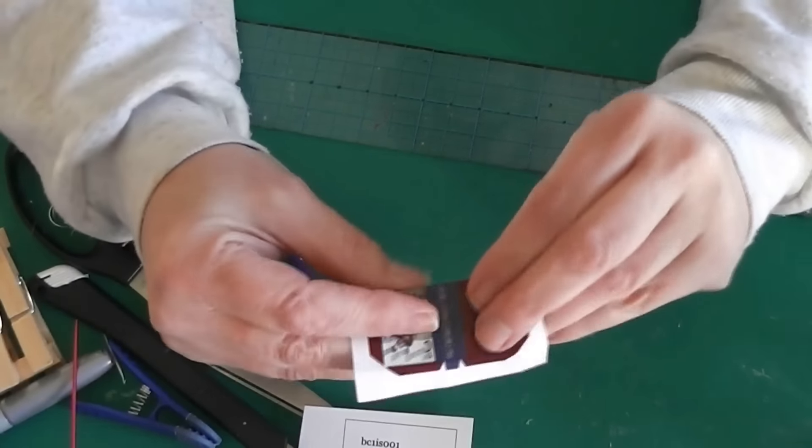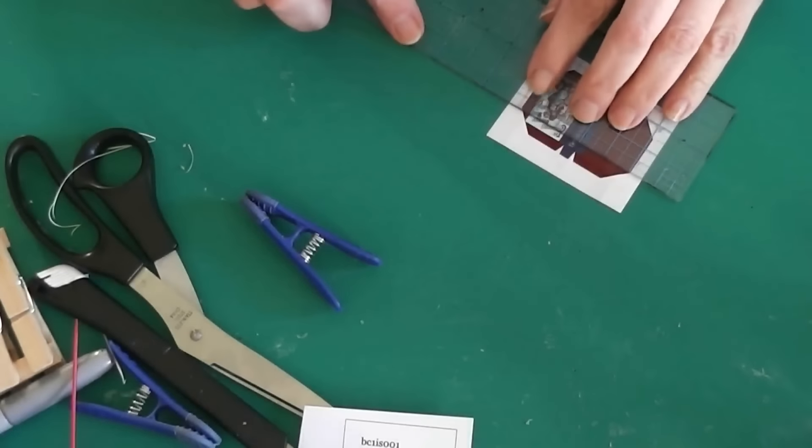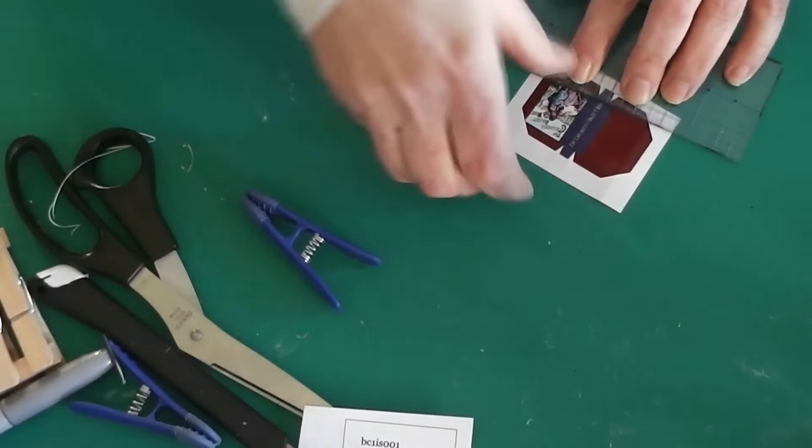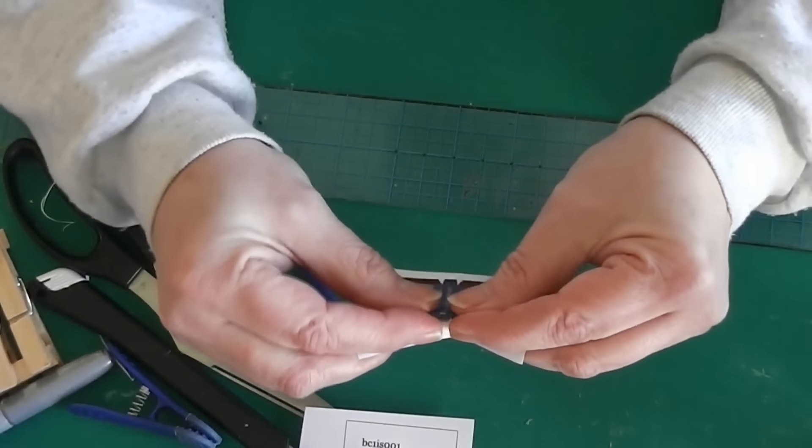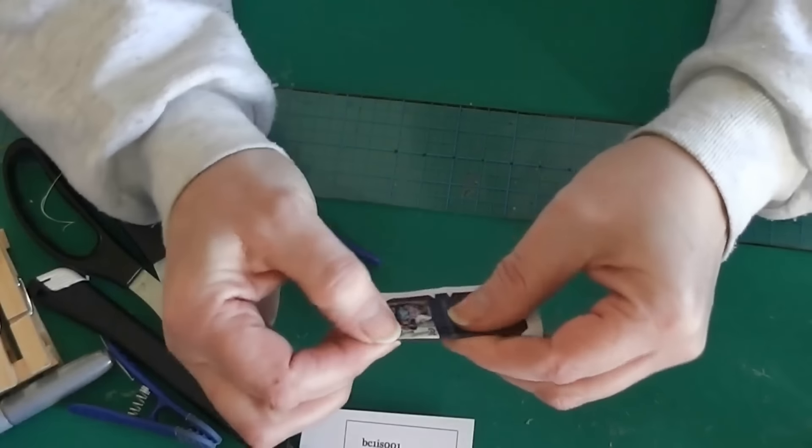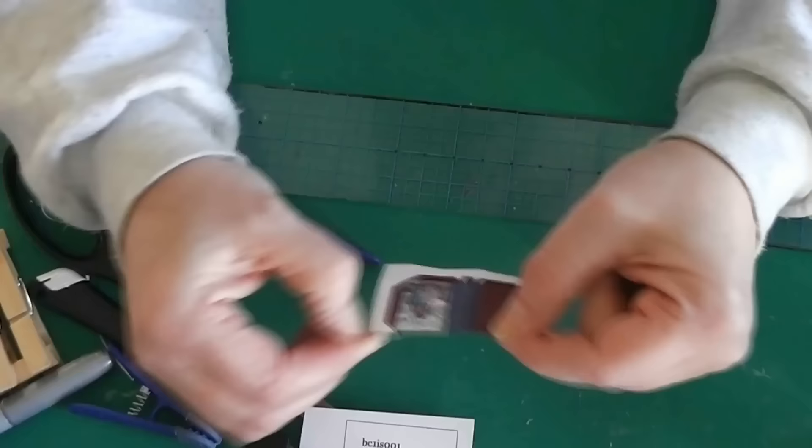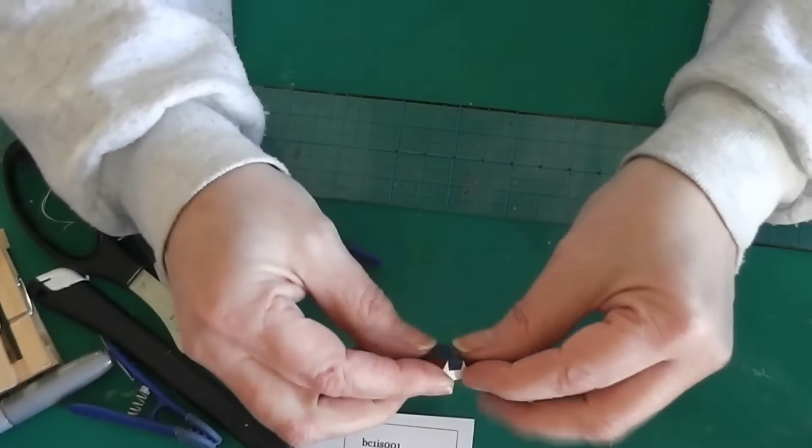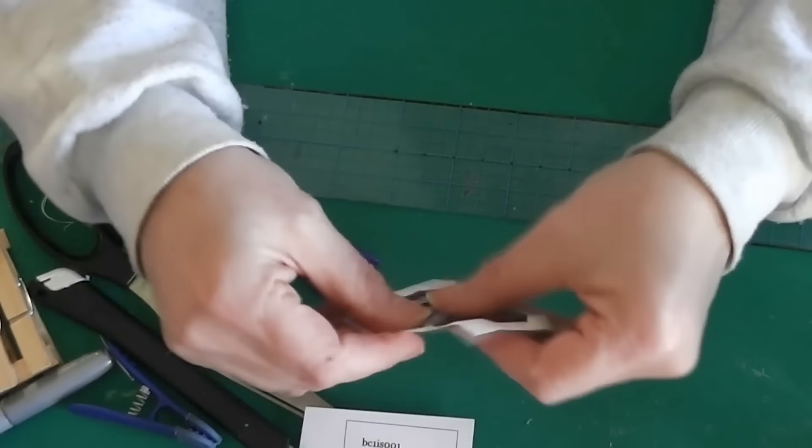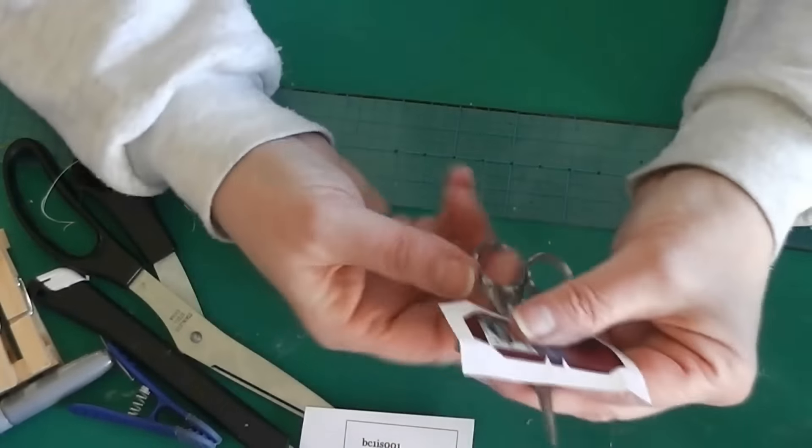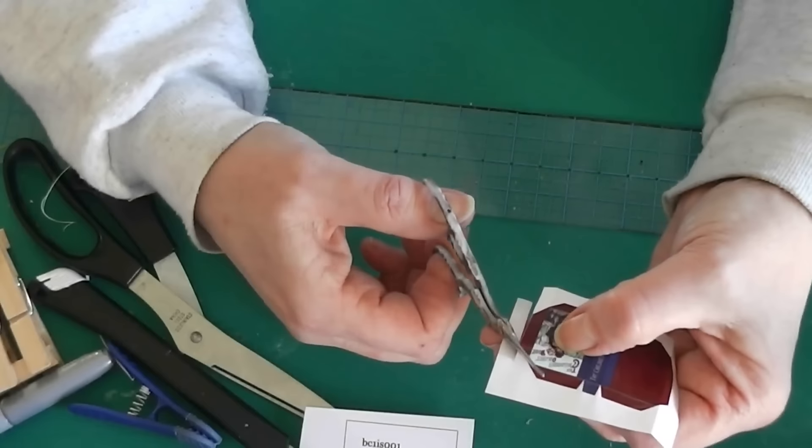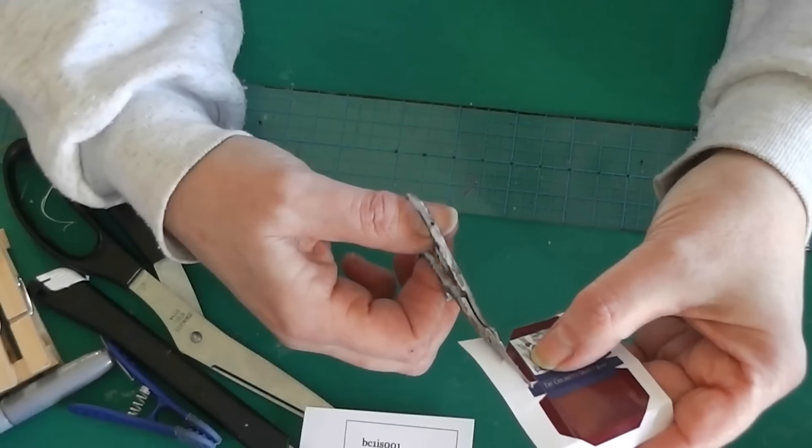Now I like to crease before I cut it. That's all done. Now I'm going to cut this out. I'm just going to use a small pair of scissors for this. I'm not going to use my ruler because there's not much to cut.